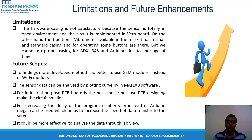Everything has its limitations but there is always room for improvement. The future scopes are to find more stable methods, and it would be better to use a GSM module instead of a Wi-Fi module. The sensor data can be analyzed by plotting with Raspberry Pi in MATLAB software. For industrial purposes, PCB design is the best choice because it makes the circuit smaller. To decrease programming delay, Raspberry Pi can be used instead of the current approach, which helps to increase data transfer speed. It could also be more effective to analyze data through LabVIEW.